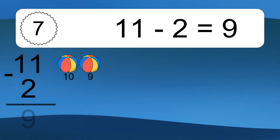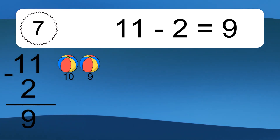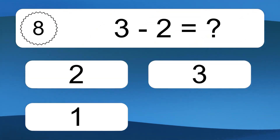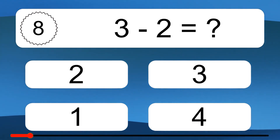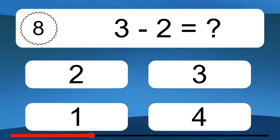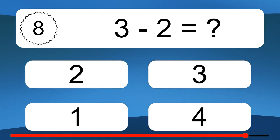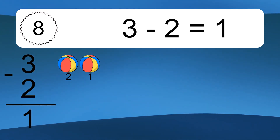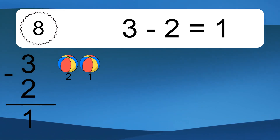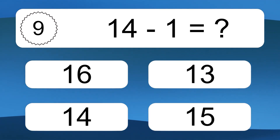Eleven minus two equals what? Eleven minus two equals nine. Let's count it: ten, nine. Three minus two equals what? Three minus two equals one. Let's count it: two, one.